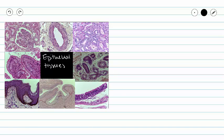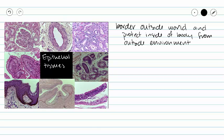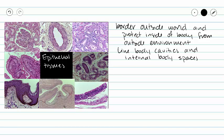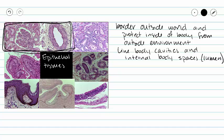This video is a continuation of our talk on epithelial tissues. Epithelial tissues border the outside world, protecting your insides from the outside. They line our body cavities and internal body spaces. So far in this video series we have covered simple squamous epithelium and simple cuboidal epithelium. We've got one more simple epithelium left, and that is simple columnar epithelium, seen in the red box here.